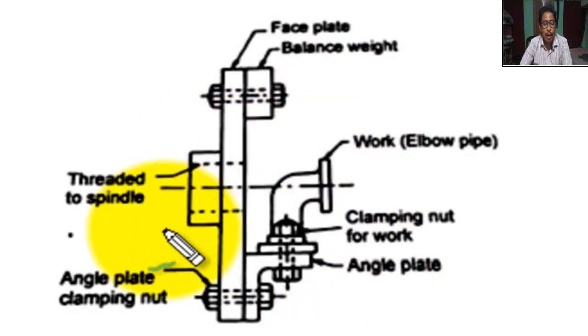This is the figure of a job holding device using angle plate. In the center of the face plate, there is a hole internally threaded to the spindle. Here, an angle plate is clamped with the face plate using a clamping nut. And this is the work, an elbow pipe. It is clamped with the angle plate by using a clamping nut.